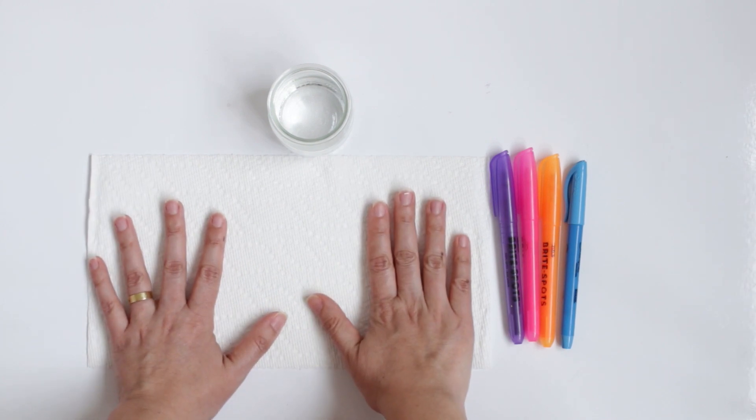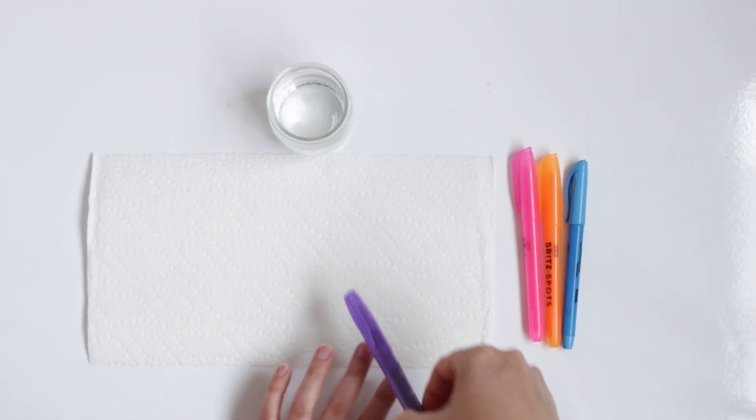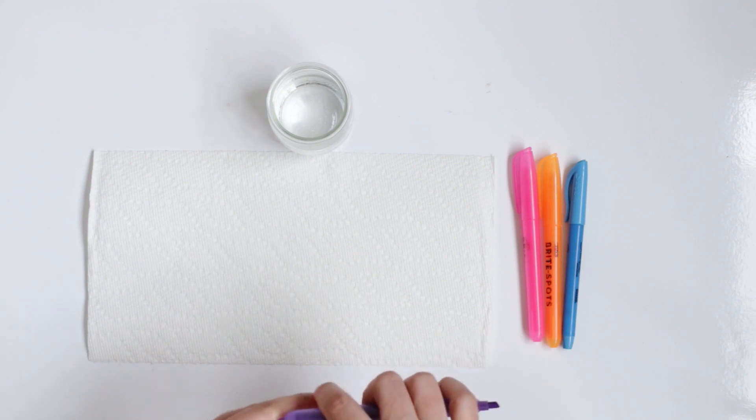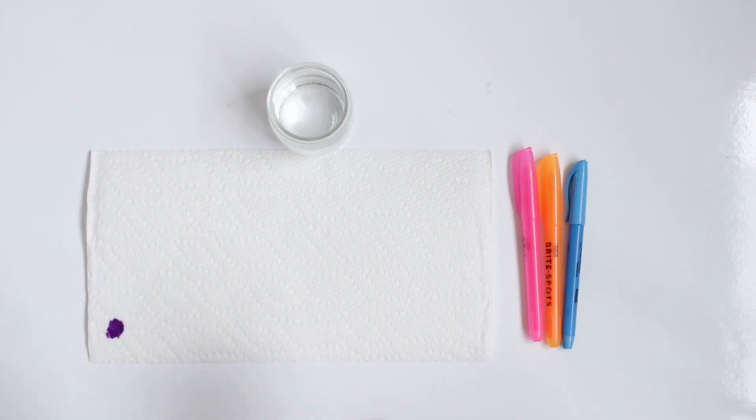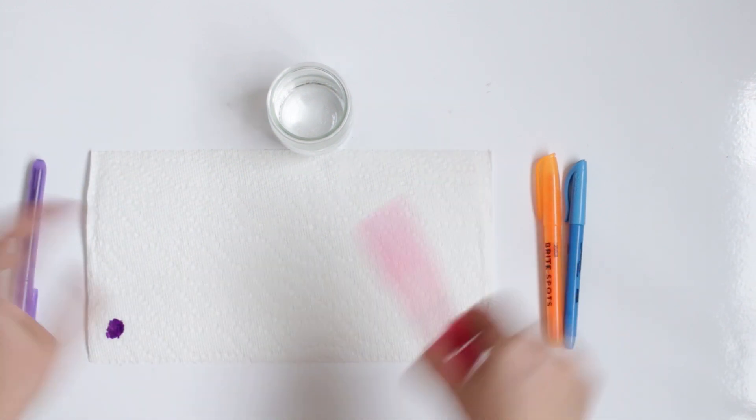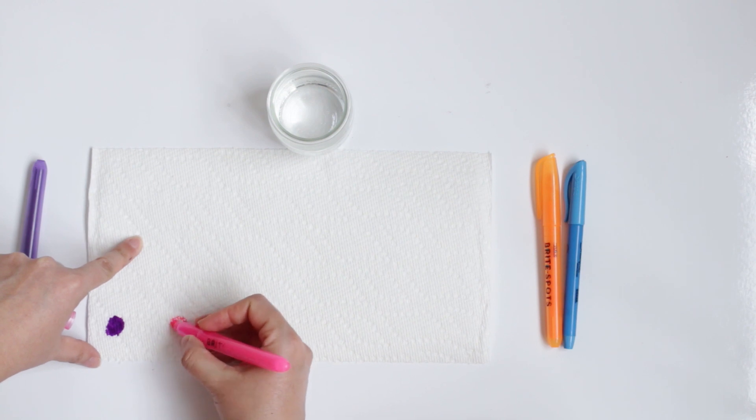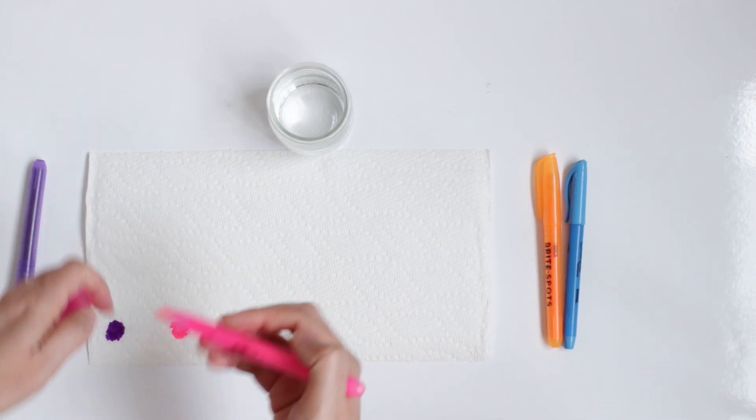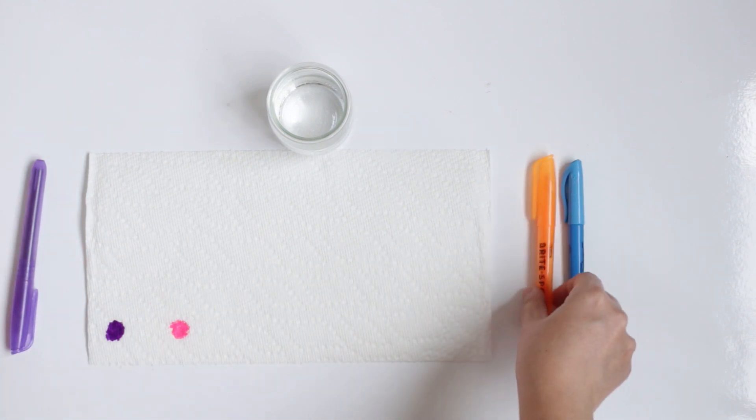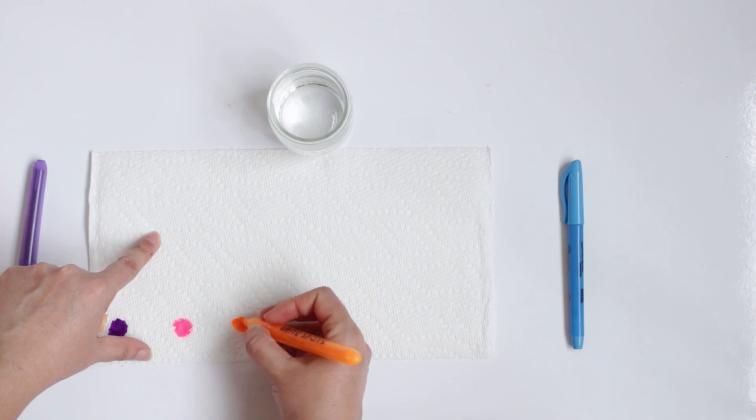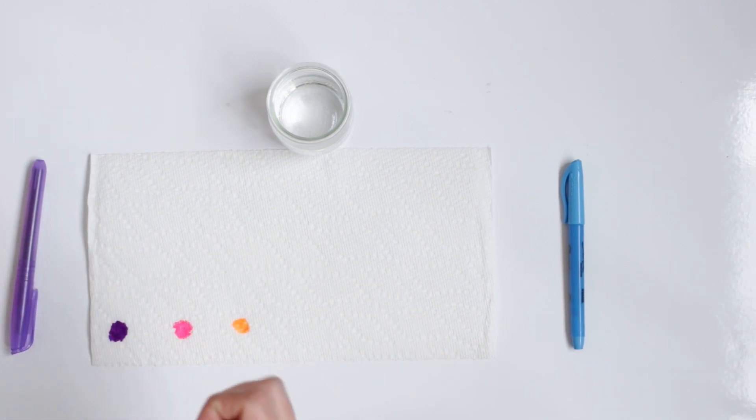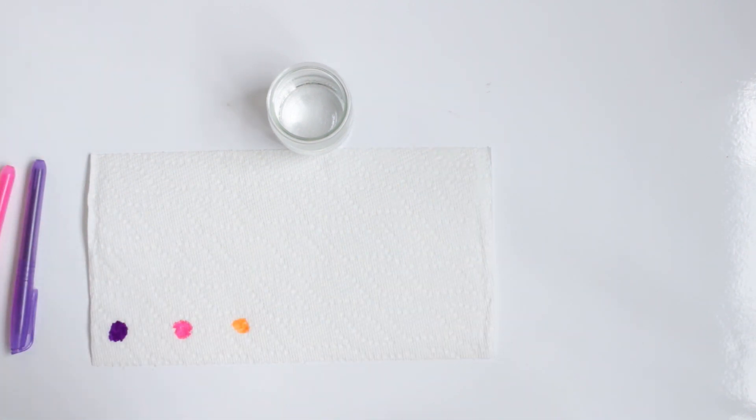So this activity you can create any picture here. I'm gonna just do some dots, for example, with purple, pink. Try to not put them so close. Give some space. Orange, and you can practice the name of the color with your kids while they're playing. Blue.